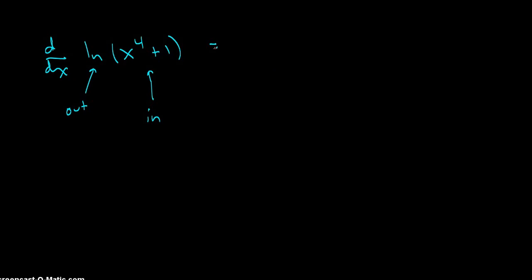Here the chain rule says to take the derivative of a composition, we take the derivative of the outside and multiply that by the derivative of the inside.